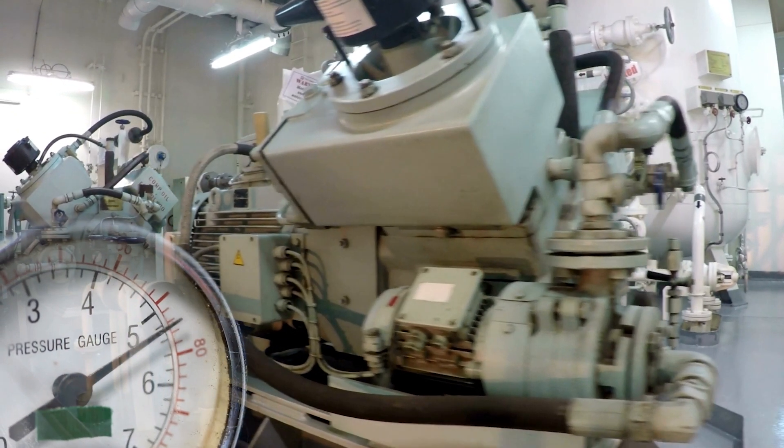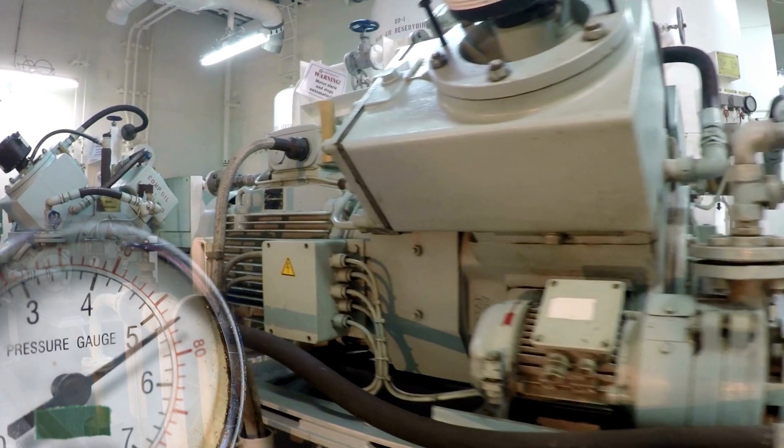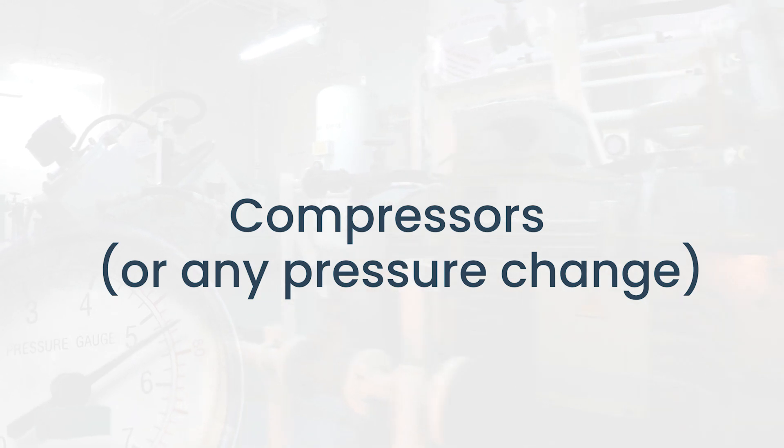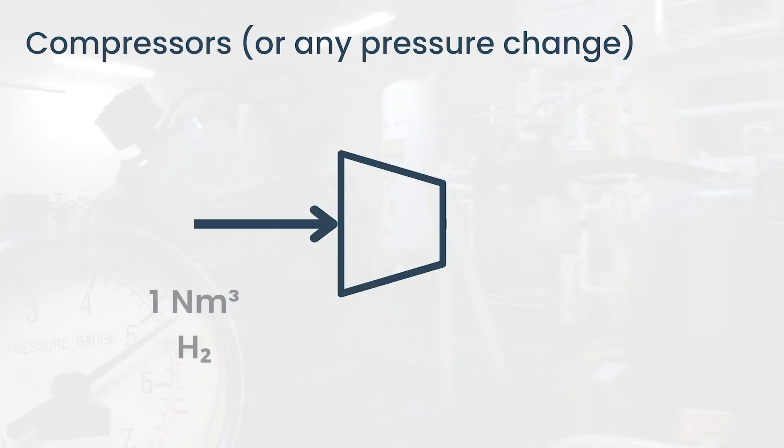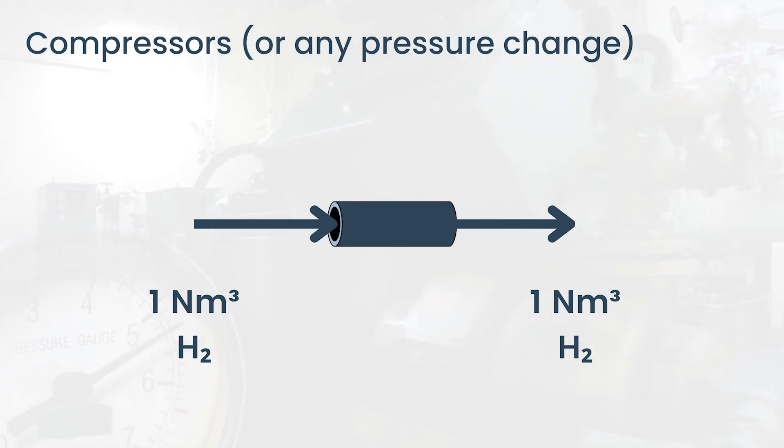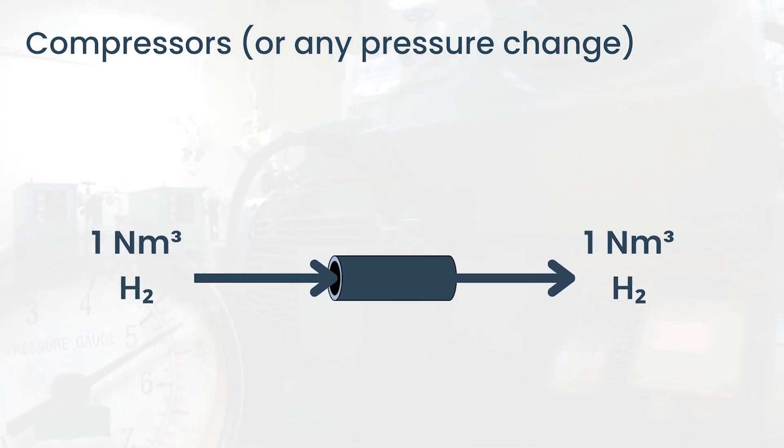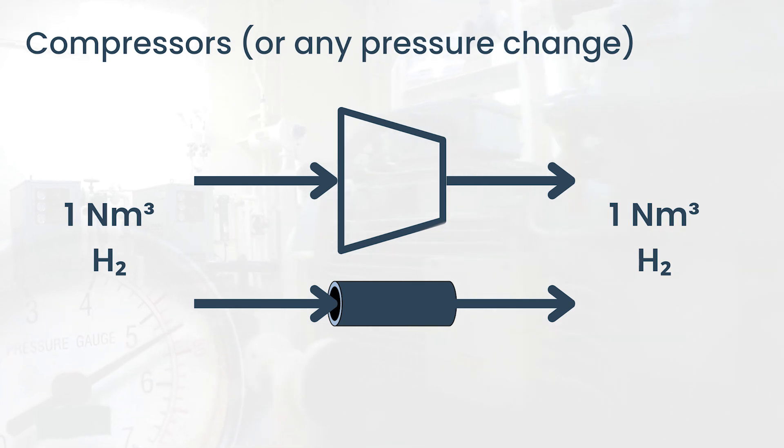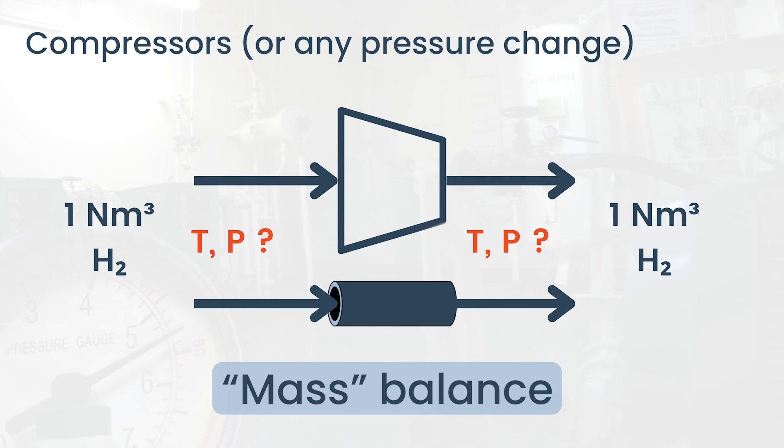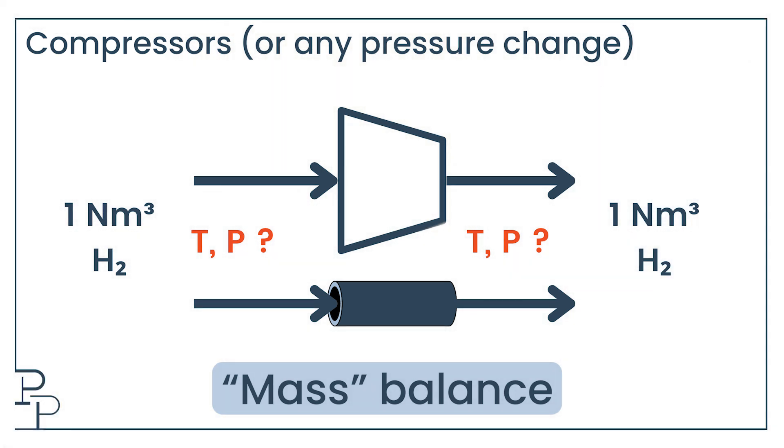There are three things I want you to take away from this video if you've never had to work with normal cubic meters per hour. Number one: compressors, or anything where the gas pressure changes, which is pretty much everything. If I have one normal cubic meter of hydrogen and I pass it through a compressor, I get one normal cubic meter of hydrogen coming out of the compressor. If I have one normal cube of hydrogen going into a pipe, I get one normal cube of hydrogen out of the pipe. In each case, the actual volume will be different in and out because the temperature and pressure are different. But that is the point of using normal cubic meters. It's like a pseudo mass unit that allows us to do balances without worrying that gas density is changing throughout our process.